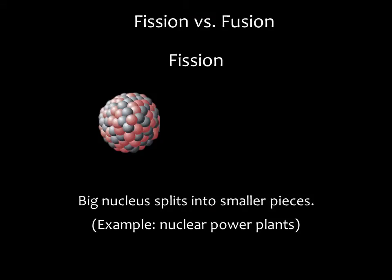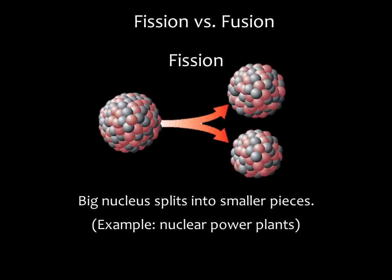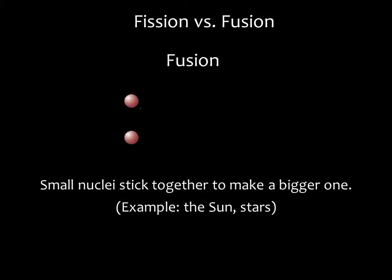First, we need to distinguish between nuclear fission and nuclear fusion. Fission is when a bigger nucleus splits into smaller pieces. Fission is how nuclear power plants on Earth generate energy. We split isotopes of uranium or plutonium in sustained chain reactions. Nuclear fusion is when small nuclei combine to make larger nuclei. This is what's going on in the sun and in other stars.